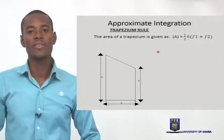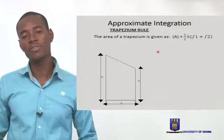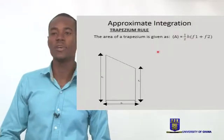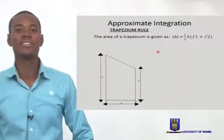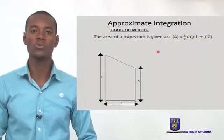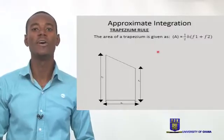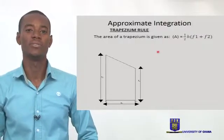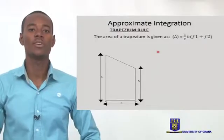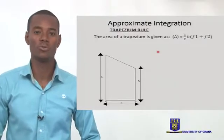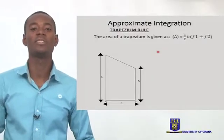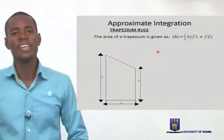In the previous lesson, we looked at the case where we have a definite area under a curve that we would want to estimate, and we use the normal integration approaches. Here, we want to use a rule which we call the trapezium rule, a very old approach that has been in existence for a long time.